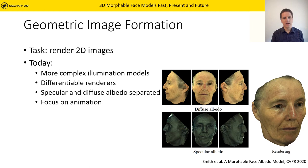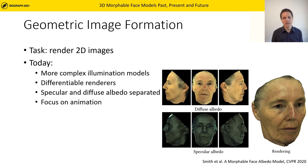To render an image from a 3D morphable model instance, usually a pinhole camera and a simple illumination model based on a point light source or spherical harmonics is deployed. Already the original paper used a differentiable renderer, and today's differentiable renderers enable end-to-end learning across datasets. Whilst differentiable ray tracers are available, they are so far not dominant in combination with 3D morphable models.